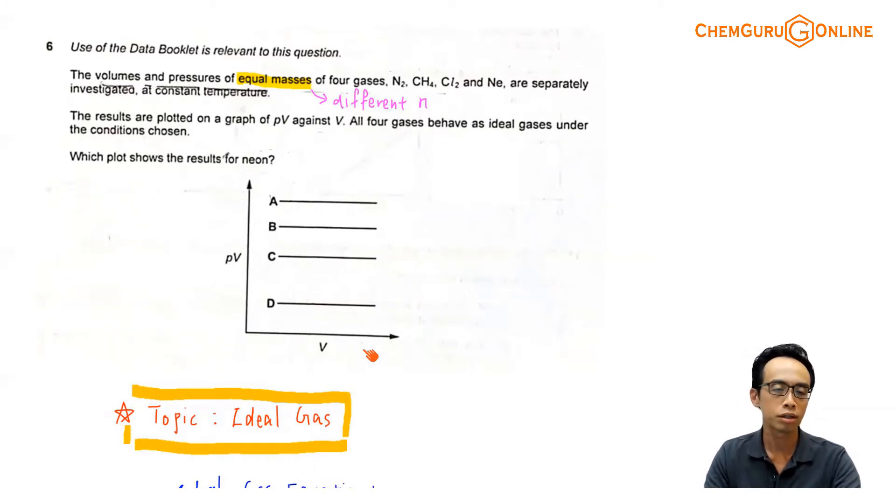Now let's take a look at question 6. The use of the data booklet is relevant to this question. The volumes and pressures of equal masses of 4 gases N2, CH4, Cl2, and Ne are separately investigated at constant temperature. So equal masses means that the number of moles will be different, because all these 4 different gases, their molar masses will be different, so I'll have different number of moles.